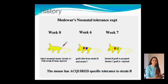Medawar's neonatal experiment can be understood from the given figure. The mouse is first injected with bone marrow from a different strain — say strain B — and in the coming weeks, grafts from strain B and strain C are done on the host mouse. After a certain duration, the strain B graft is accepted and the strain C graft is rejected. This happens because the strain B bone marrow was injected in the neonatal mouse in the early days, shown at week 0. So the mouse has acquired specific tolerance to strain B but not to strain C, and thus the strain C grafting failed.